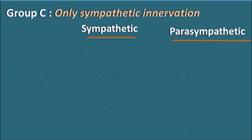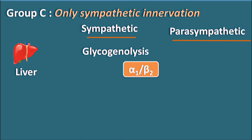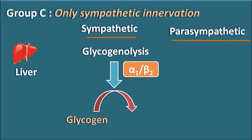Now let us go with Group C, where only sympathetic innervation is present. One organ is the liver. In the liver, glycogenolysis is going to be increased through alpha 1 or beta 2 receptors, where glycogen is broken down to produce glucose, and gluconeogenesis is also increased at the liver, so that the sympathetic system can increase glucose levels within the body. The parasympathetic system has no effect at the liver.